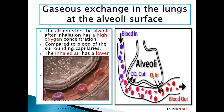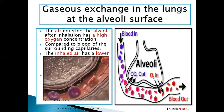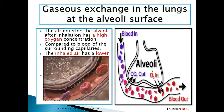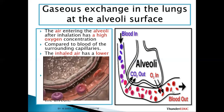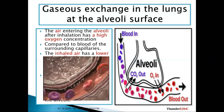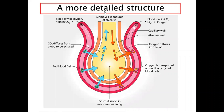This results in oxygen diffusing from the alveoli into the blood, and carbon dioxide diffusing from the blood back into the alveoli. Too much oxygen concentration in the lungs means less in the blood, so diffusion goes in that direction. Too much carbon dioxide in the capillaries and less in the lungs means it moves that way. This is how gaseous exchange takes place, as shown in this more detailed structure of the alveolus.